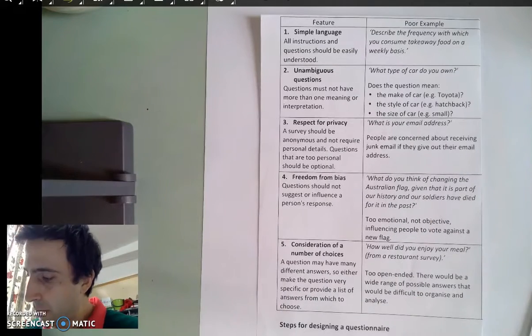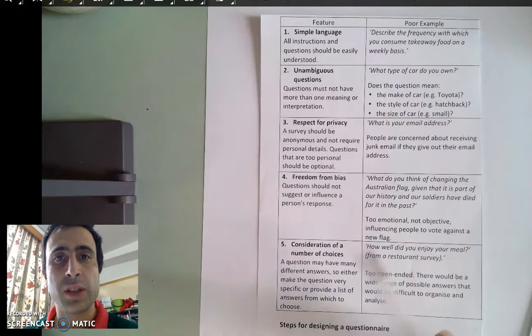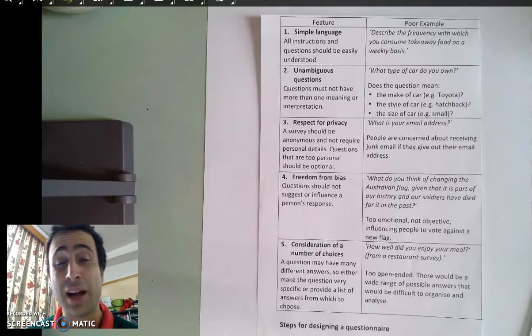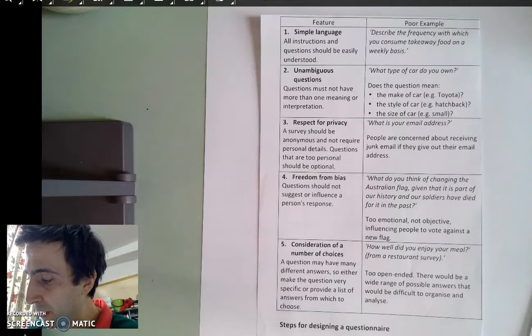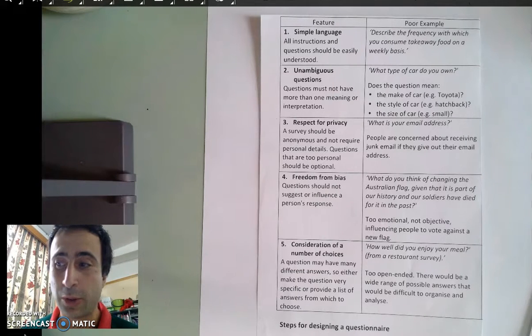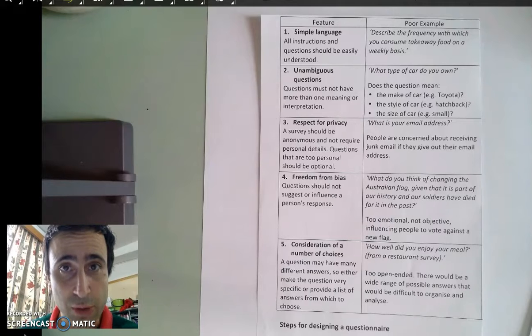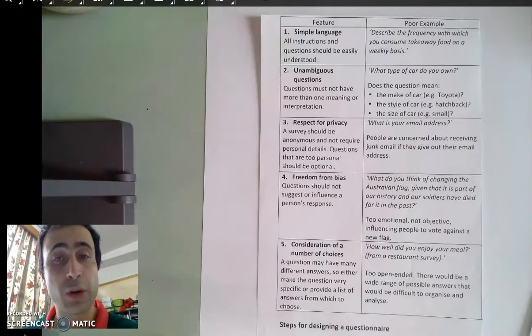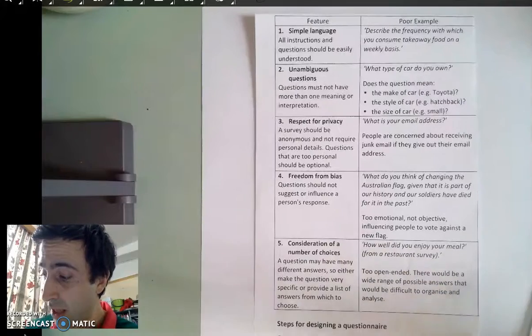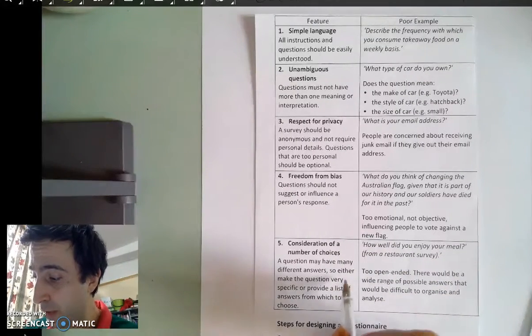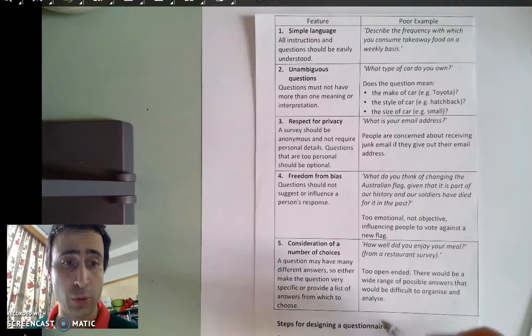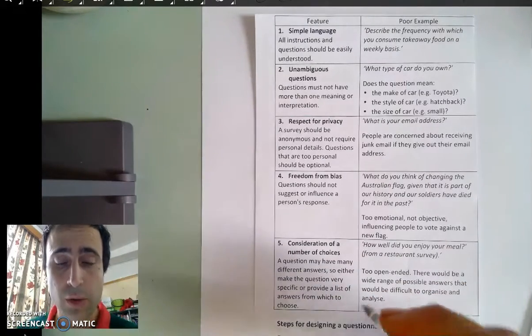Consideration of the number of choices means make your questions small enough to actually answer. If you ask 'how well did you enjoy your meal?' it's very open-ended. By providing specific questions like 'was the meal sweet, was the meal sour, did you enjoy the first course?' you can make it more specific. You'll often see a bunch of different answers—good, not good—and you'll have to tick or choose one of the options.